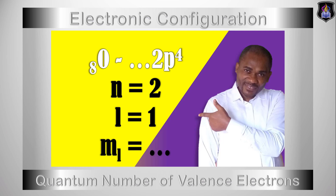Hi, this is the Science Chef. In this video, I'll teach you how to identify the four quantum numbers of an electron or valence electron in an atom. To know how to identify the quantum numbers of electrons in an atom, you would have to watch this video to the end.